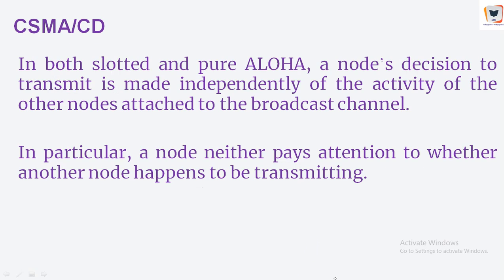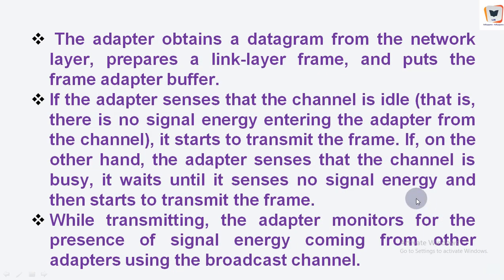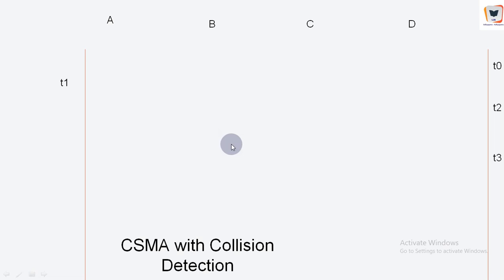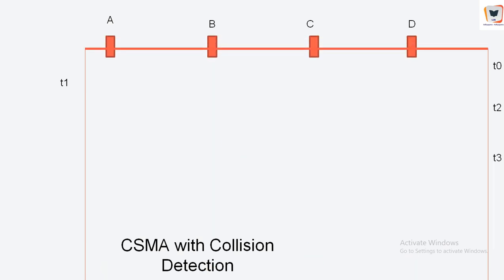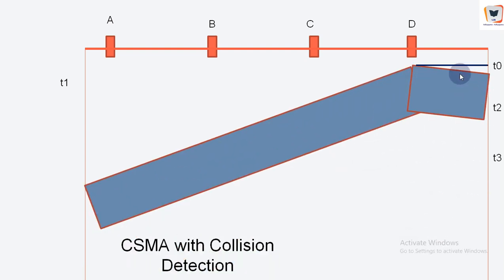These two rules are embodied in the family of CSMA and CSMA/CD protocols. For example, at time T-naught, consider four nodes A, B, C, D along a broadcast channel. At time T-naught, node D senses the channel is idle since no other nodes are currently transmitting, and so node D begins transmitting, with its bits propagating in both directions along the broadcast medium.